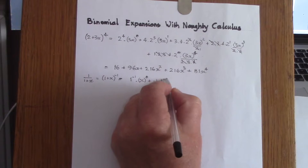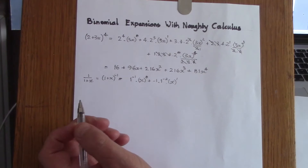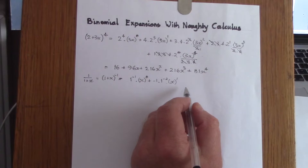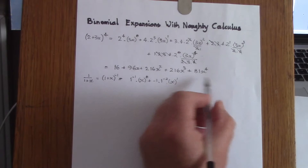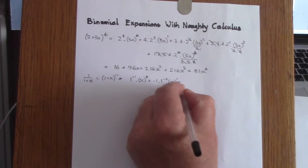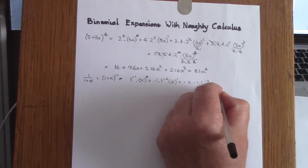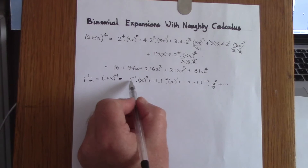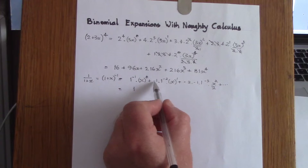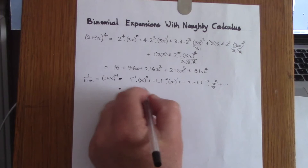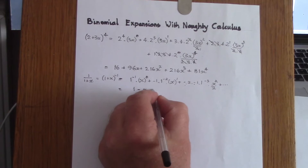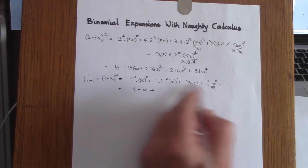Let's just find the first three terms, since these are infinite expansions. We differentiate to get plus minus 2 times minus 1 times 1 to the power of minus 3, then integrate to get x to the power of 2 over 2. Simplifying: the first term is 1, the second term is minus x, and for the third we have minus times minus which is plus, and 2 over 2 cancels, leaving x squared.